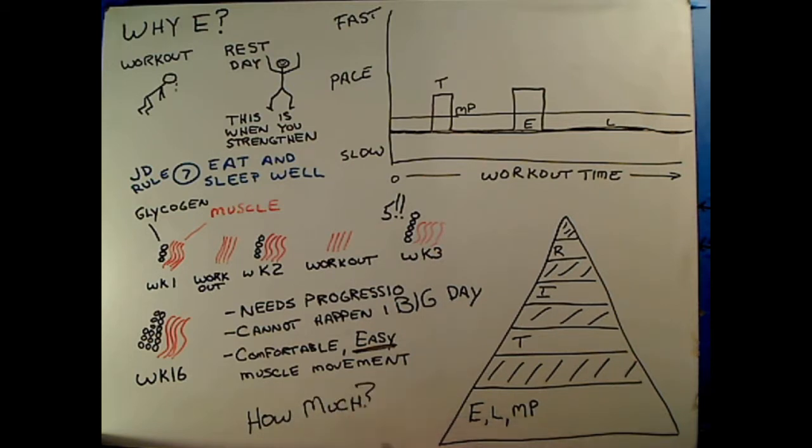So your question now is, how much of this easy stuff should I do? And the answer is 70 to 75%. It's down here at the bottom of the pyramid. You can see you just can't do too much of it really.